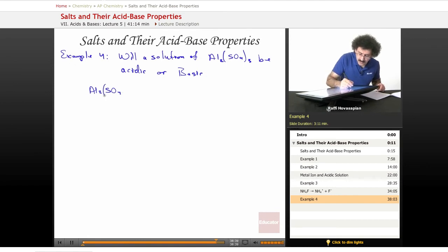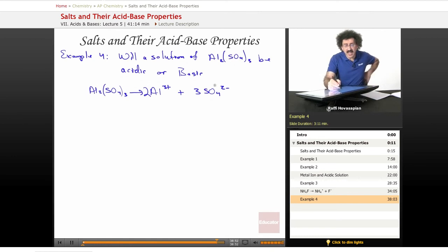Well, AL2SO43 dissociates into AL3+, aluminum 3+, plus 3SO42-. So we have an anion, a negative ion, which is the conjugate base of a weak acid.